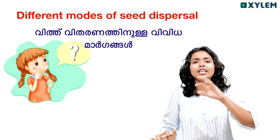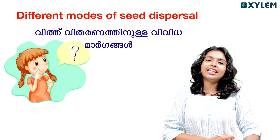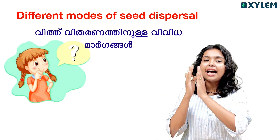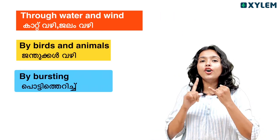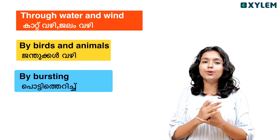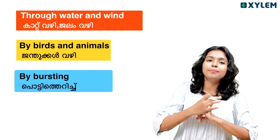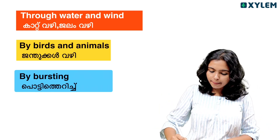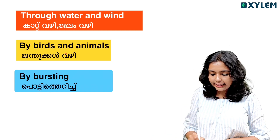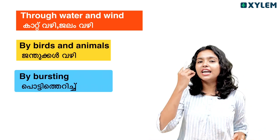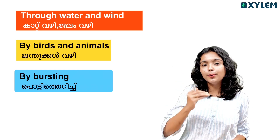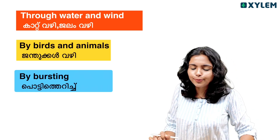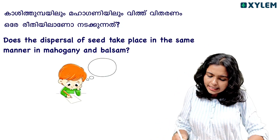What is the difference between different modes of seed dispersal? The different modes of seed dispersal are: through water and wind, by birds and animals, and by bursting. These are the main points — 1, 2, 3, and 4 points. There is a difference between different modes of seed dispersal. In the same way, we will go through each mode.